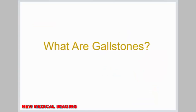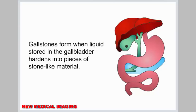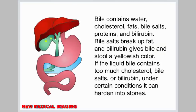What are gallstones? Gallstones form when liquid stored in the gallbladder hardens into pieces of stone-like material. Bile contains water, cholesterol, fats, bile salts, proteins, and bilirubin. Bile salts break up fat, and bilirubin gives bile and stool a yellowish color. If the liquid bile contains too much cholesterol, bile salts, or bilirubin, under certain conditions it can harden into stones.